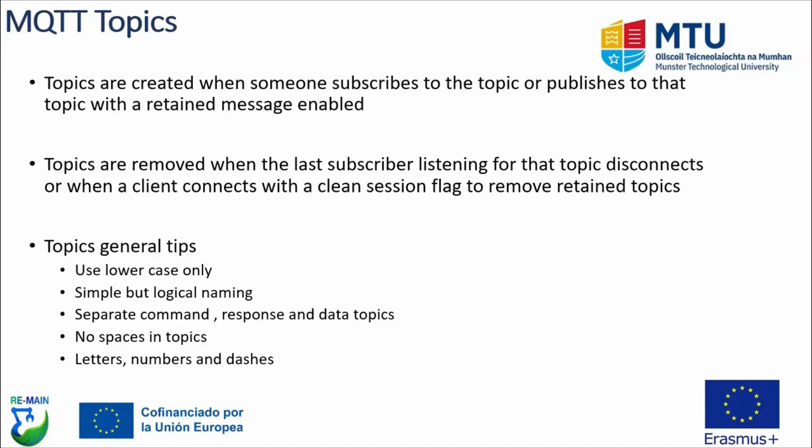Some general tips for creating topics: use either all lowercase or all uppercase — pick one and go with it. Use simple but logical naming; the first layer of the topic could be the process ID or name, the second layer individual tags, and so on. Ideally separate your command, response, and data topics from each other. Avoid spaces within topics and limit topics to letters, numbers, and dashes. If setting this up for the first time, agree on a template of what your topics will look like across your entire automation team.